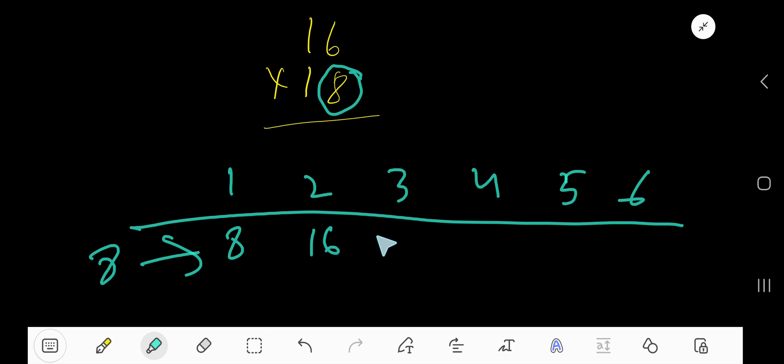8 times 3 is equal to what? Just add 8. So, 6 and 8, 12, 14... 24. So, 8 times 3 is 24.